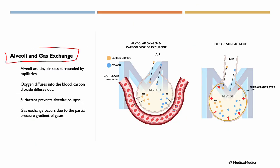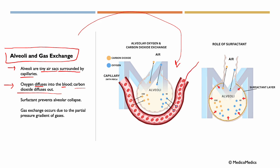Now let's talk about alveoli and gas exchange. Alveoli are tiny air sacs surrounded by capillaries. What happens is that oxygen diffuses into the blood and carbon dioxide diffuses out. Look at this illustration — we have the capillaries, where red blood cells are flowing through, and then we have the alveolar sac, surrounded by the capillaries.